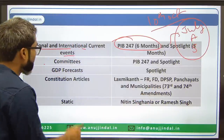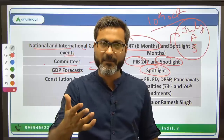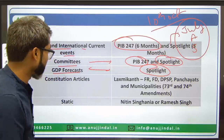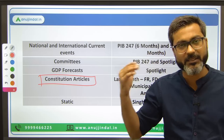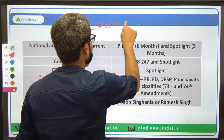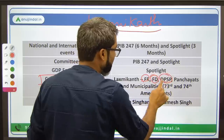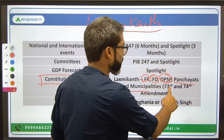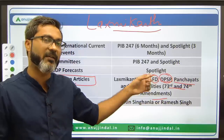Cover Spotlight and PIB up to 10th October. For committees, use PIB 247 and Spotlight. For GDP forecasts, a special session will be conducted covering the GDP forecasts of all important international organizations. For constitutional articles, you have to read only four chapters from Laxmikant's Indian Polity: Fundamental Rights, Fundamental Duties, DPSP (Directive Principles of State Policy), and Panchayats and Municipalities — which cover the 73rd and 74th Constitutional Amendment Acts.